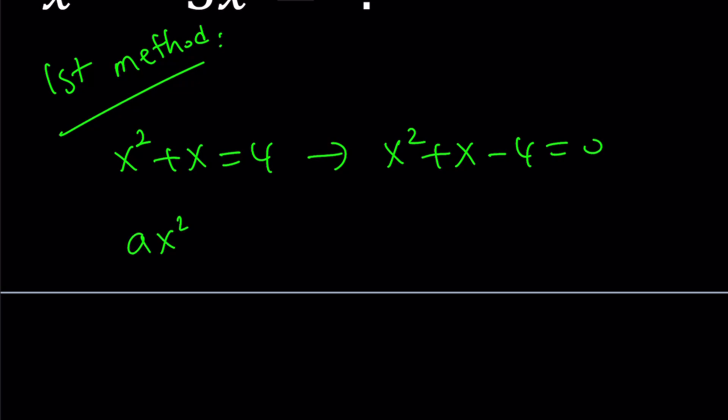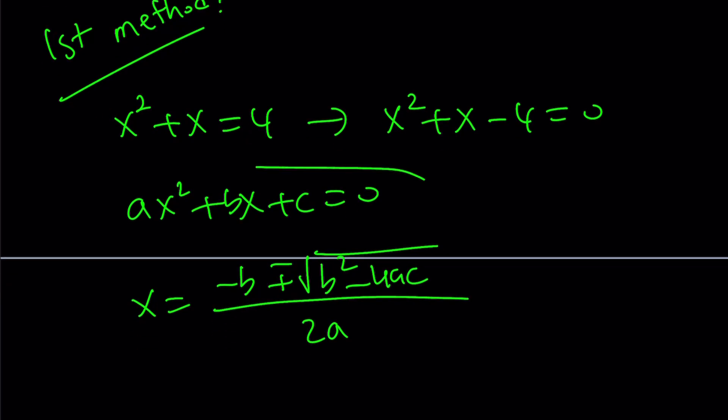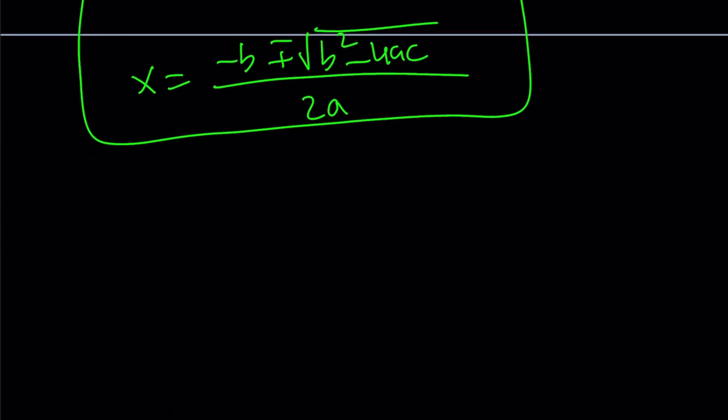And then remember, for quadratic equations like this one, we have what is called a quadratic formula. And that is given as follows. So this is the quadratic formula, in case you didn't know. And if we apply that to our equation, now notice that a is equal to 1, b is equal to 1, and c is equal to negative 4 for our equation.